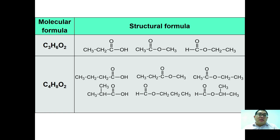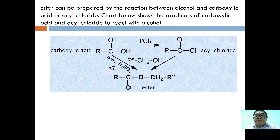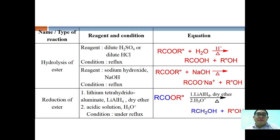When considering isomerism of esters, we should also consider carboxylic acids as isomers. For C3H6O2: propanoic acid, methyl ethanoate, and ethyl methanoate are all isomers. For C4H8O2, there are more isomers — two from carboxylic acids and four from esters. Esters can be prepared from the reaction between alcohol and carboxylic acid, or acyl chloride. A flow chart shows the readiness of carboxylic acid to react with alcohol.